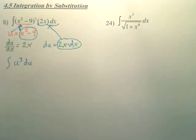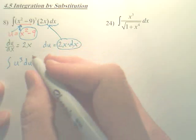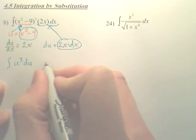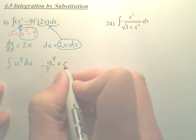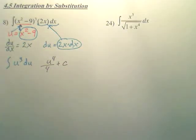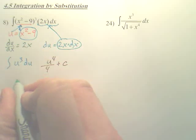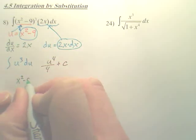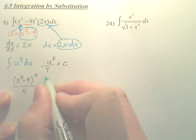Can I integrate that now? Now just integrate this. The answer is simply going to be u to the fourth over 4 plus c. What do you think the next step is going to be? Put u back in. And u was x squared minus 9, so my answer is x squared minus 9, all to the fourth, over 4 plus c.